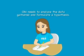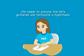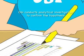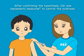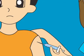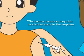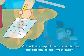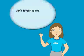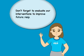Obie needs to analyze the data gathered and formulate a hypothesis. Obie conducts analytical investigation to confirm the hypothesis. After confirming the hypothesis, Obie now implements measures to control the outbreak. The control measures may also be started early in the response. Obie then writes a report and communicates the findings of the investigation. Don't forget to evaluate our interventions to improve future responses.